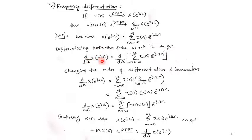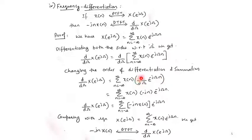Differentiating both sides with respect to ω: d/dω of X(e^{j\omega}) = d/dω of summation over n of x(n)·e^{-j\omega n}. Interchanging the order of differentiation and summation: summation over n of x(n)·∂/∂ω of e^{-j\omega n}. Differentiating e^{-j\omega n} with respect to ω gives (−j·n)·e^{-j\omega n}. So we get summation over n of (−j·n)·x(n)·e^{-j\omega n}.